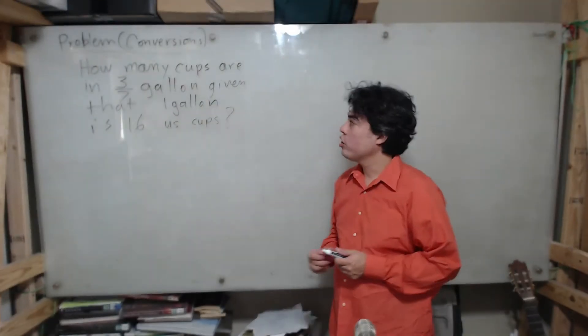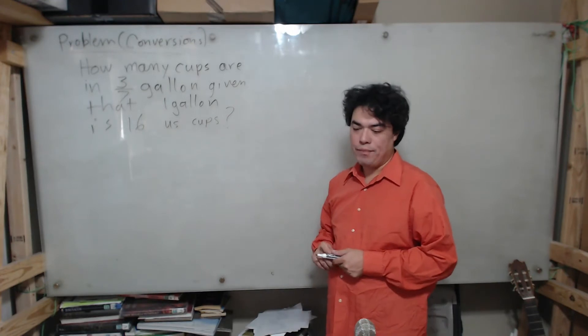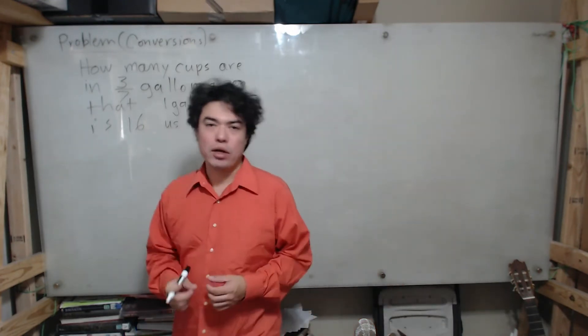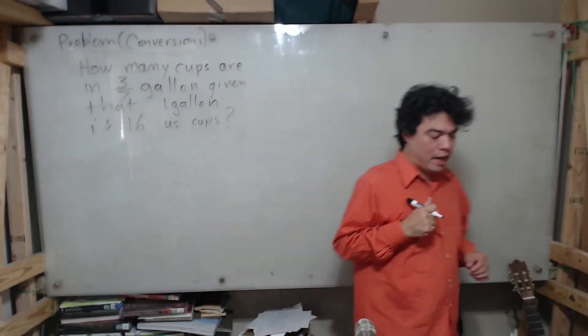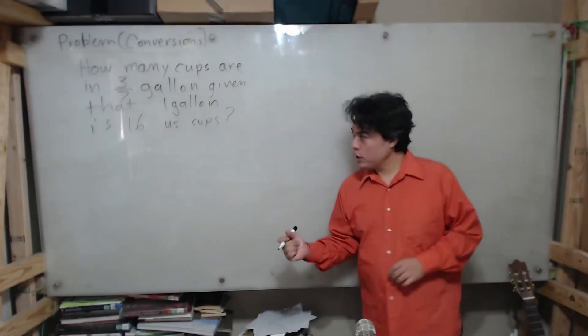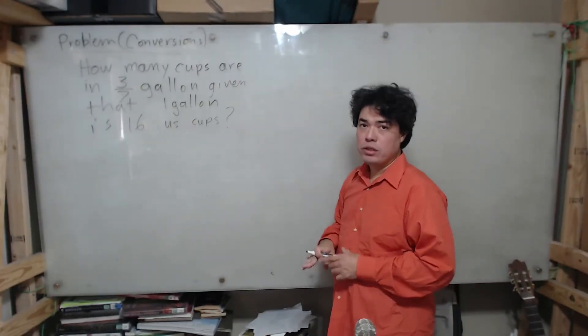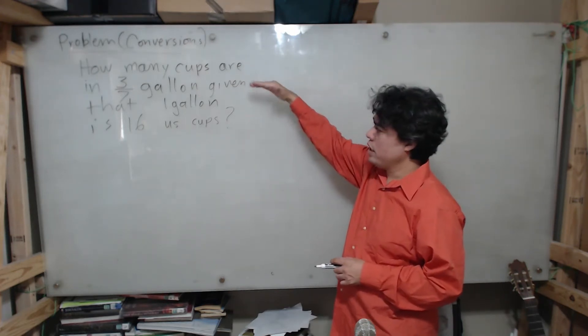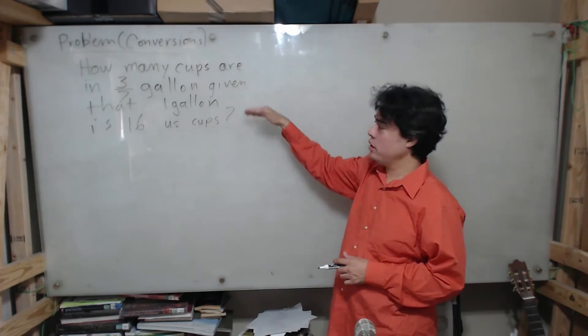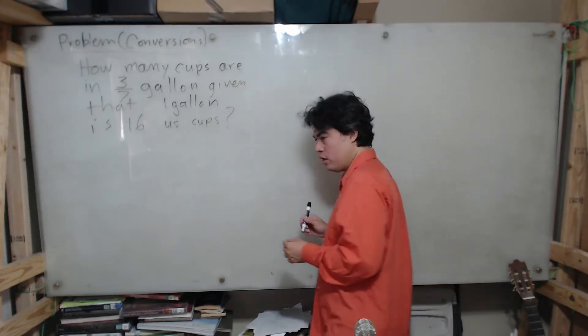Here we are, we're going to do another conversion problem. This is a typical proportion type problem when you have to convert from one unit to another. Let's read it first: How many cups are in three-sevenths of a gallon given that one gallon is 16 US cups?